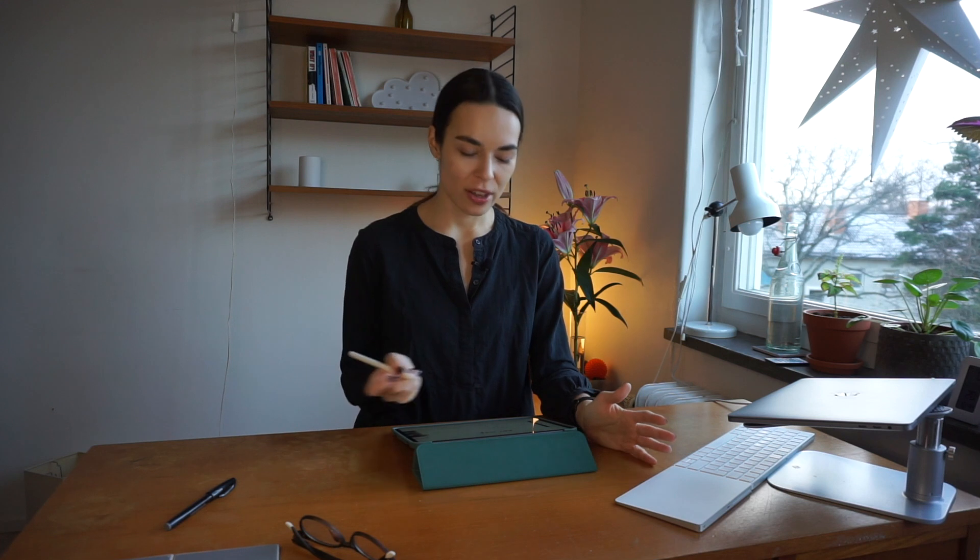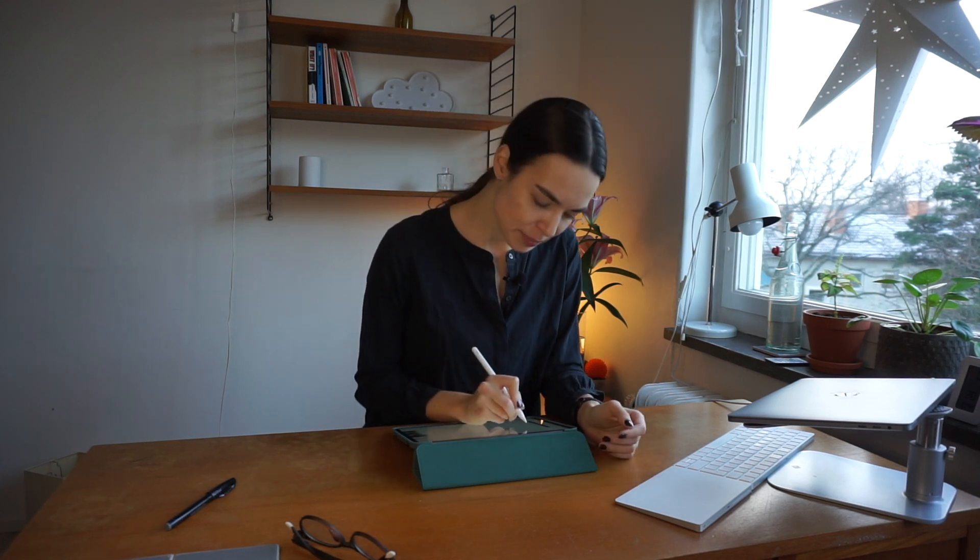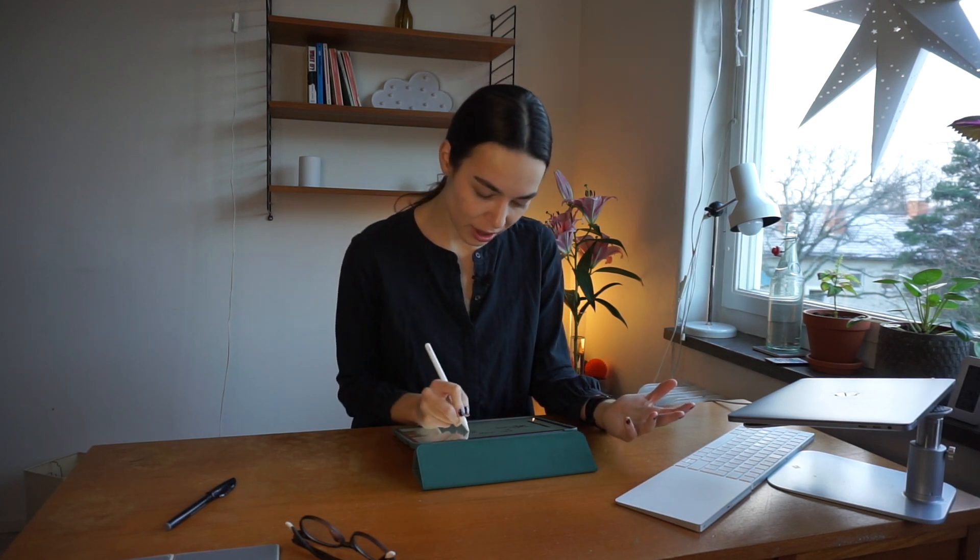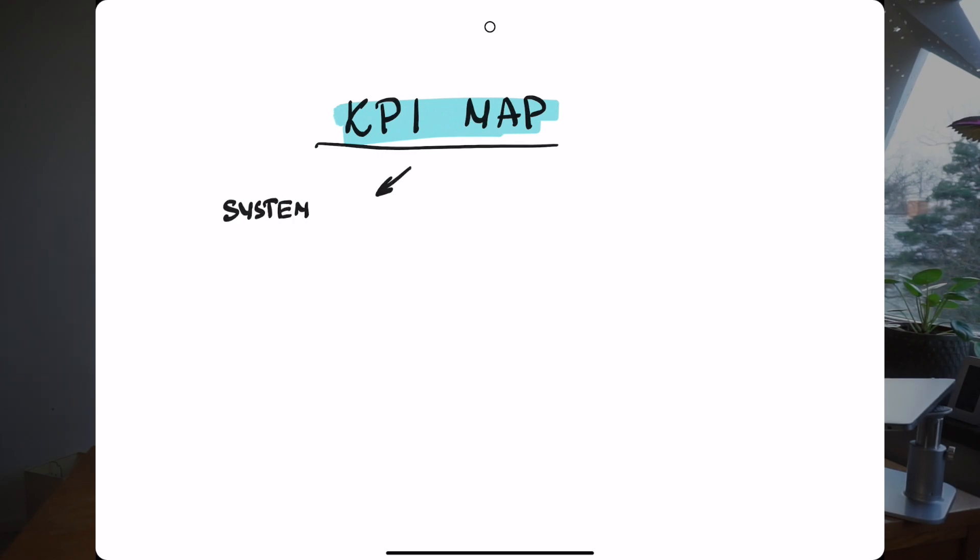First things first, there are different types of KPIs for different use cases. There are product performance or system performance KPIs, and there are user experience KPIs. Those are the ones most commonly used for understanding product performance — to see whether a new feature is useful or not and generally to understand the track the product you're working on is going. So we're going to focus on those a little bit more.